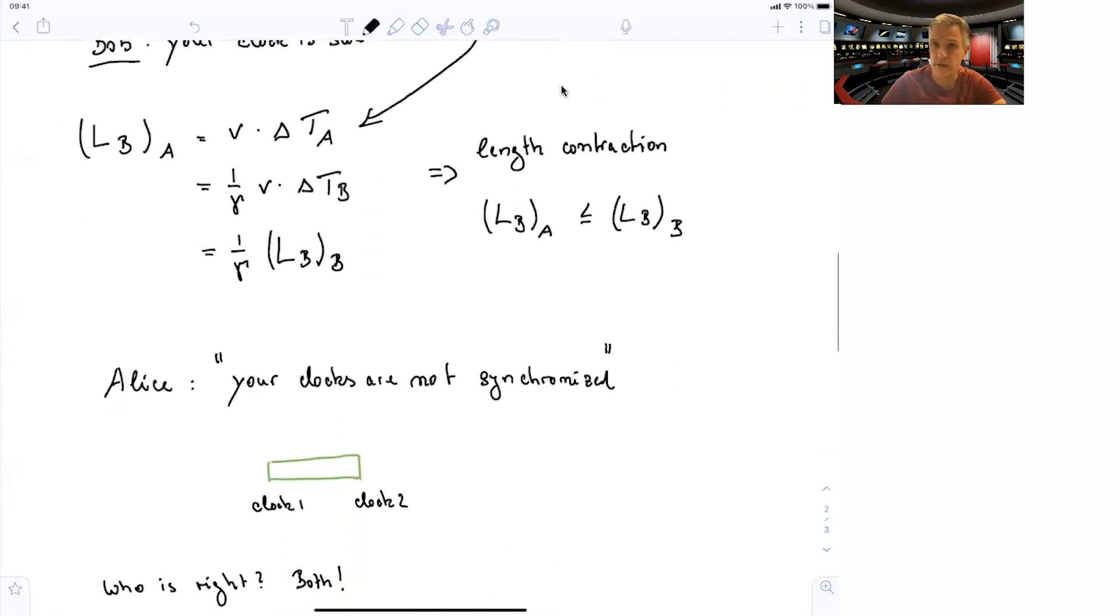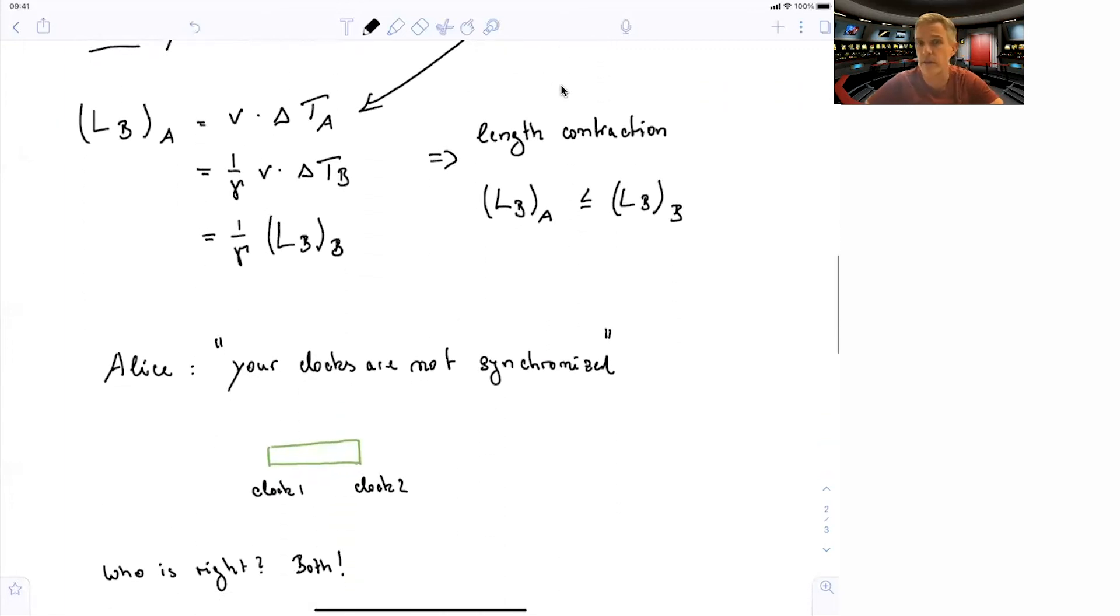So how can we resolve this? Alice will argue that the two clocks Bob used are actually not synchronized. And if you paid a lot of attention, you see that I'm actually not looking at the same clock. I had a look at the clock at the beginning of the spacecraft and at the end of the spacecraft. And while they are synchronized for Bob, they're not synchronized for Alice. Who's right? Both are right. They're just observing events or sequences of events with two different reference frames.